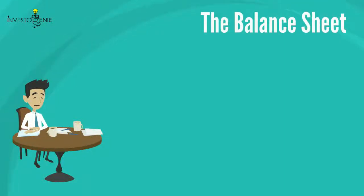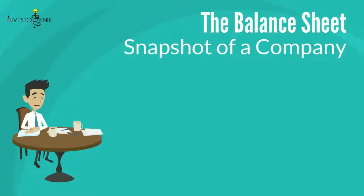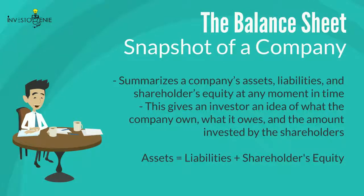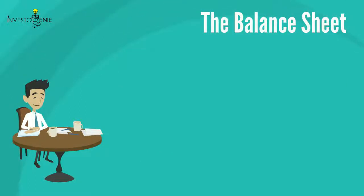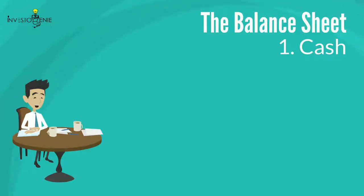Now let's move on to the second financial statement: the balance sheet. A balance sheet is a snapshot of a company. It summarizes a company's assets, liabilities, and shareholders' equity at any moment in time. This gives an investor an idea of what the company owns, what it owes, and the amount invested by the shareholders. The balance sheet follows this simple formula: assets equals liabilities plus shareholders' equity.